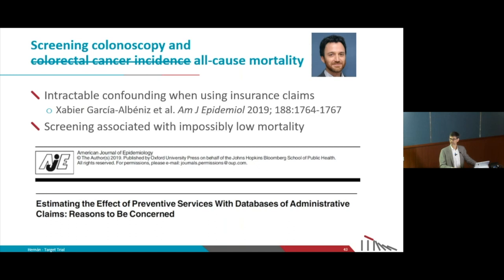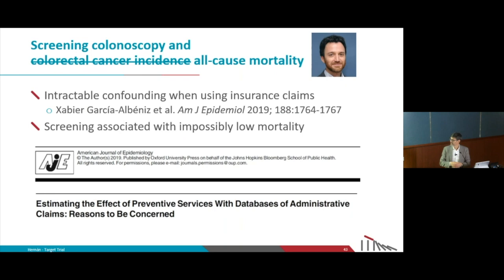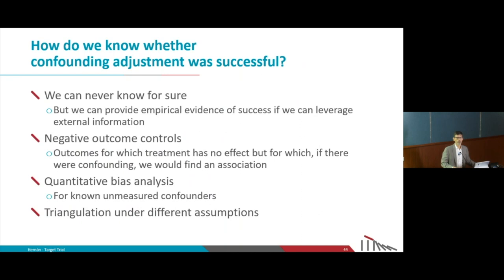There are cases where we are not going to be able to use certain databases for causal inference from observational data. For example, if we try to estimate the effect of preventive services on total mortality using insurance claims, there isn't enough clinical, lifestyle, and other information to adjust for confounding. We cannot know for sure when our adjustment for confounding has been successful, because it's an observational study. We don't know if we have all the confounders or not.